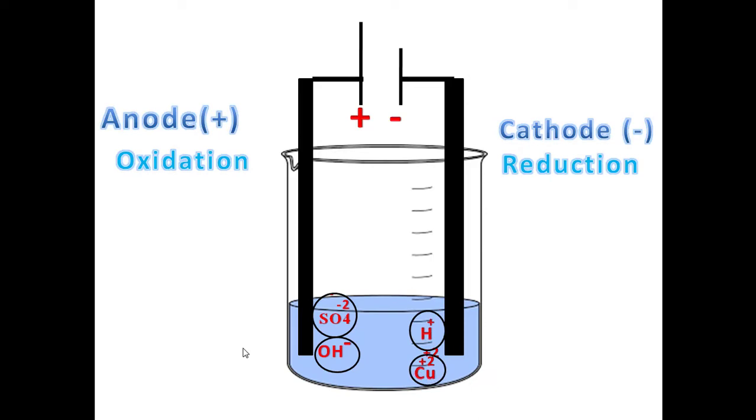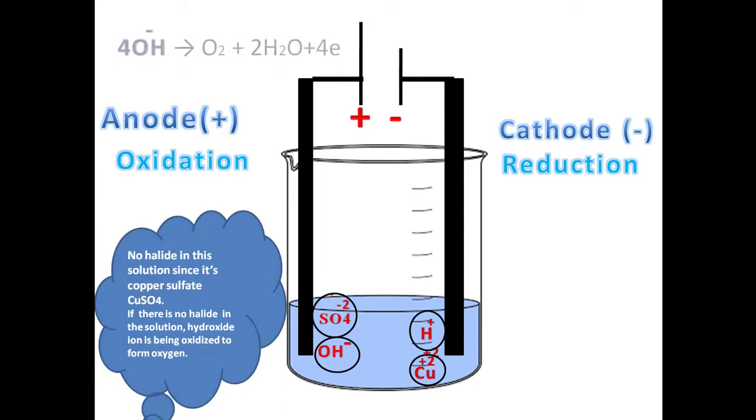So here we have four types of ions. According to the rule here, we have no halide in the solution. I mean, there is no chloride ions, no bromide, and no iodide. So hydroxide ion will be oxidized to form oxygen bubbles. And here we have the oxidation equation that shows the oxidation of hydroxide ion into water molecules and oxygen bubbles.